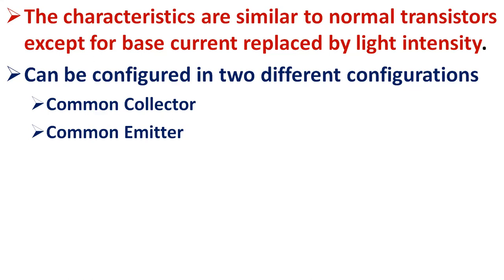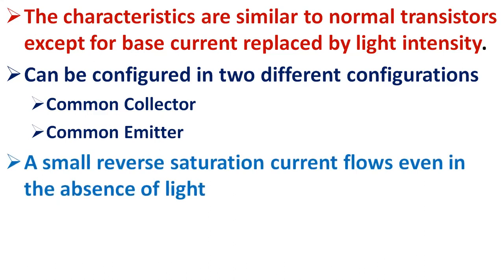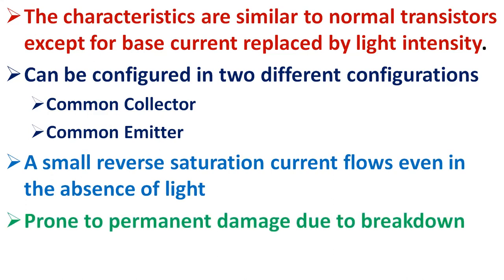The phototransistors can be configured into two different configurations like common collector and common emitter, depending on the terminal which is common between the input and output terminals, similar to normal transistors. A small reverse saturation current called dark current flows through the transistor even in the absence of light, whose value increases with an increase in temperature, a property identical to that exhibited by ordinary transistors. Phototransistors are prone to permanent damage due to breakdown if the voltage applied across the collector-emitter junction increases beyond its breakdown voltage, just as in the case of normal transistors.